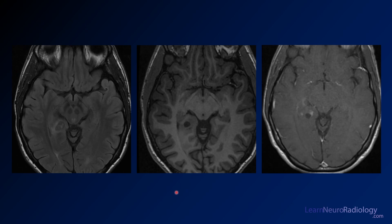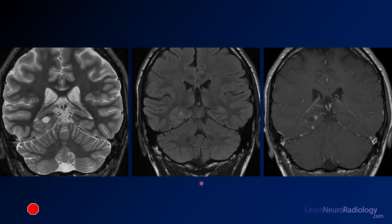Here we have some images from around the level of the midbrain capturing most of the temporal lobes. You have a FLAIR, a T1 pre-contrast, and a T1 post-contrast. Now we also have some coronal images through the same area — a coronal thin T2, coronal FLAIR, and post-contrast again.